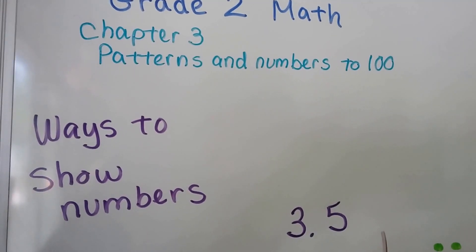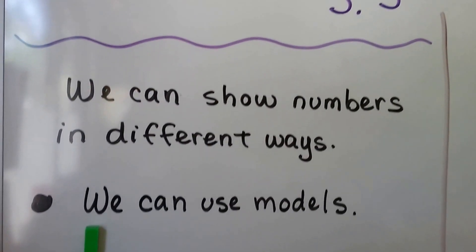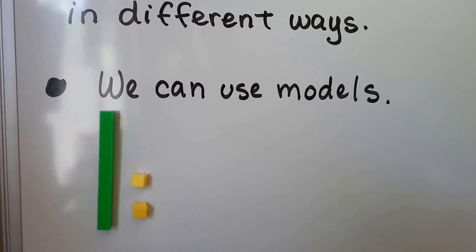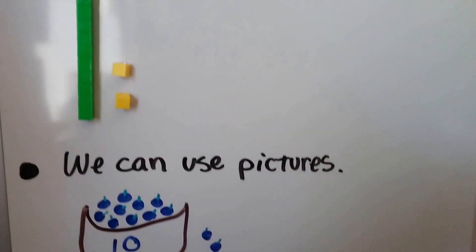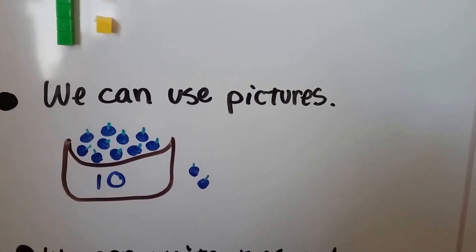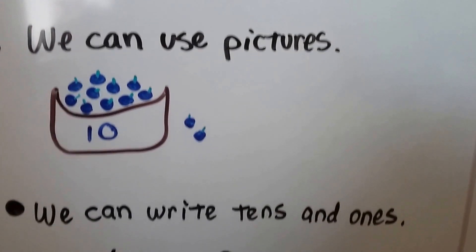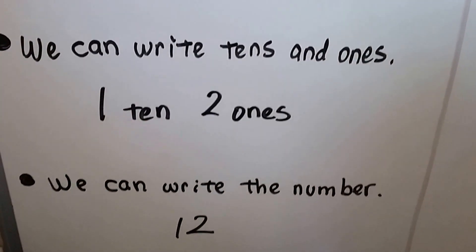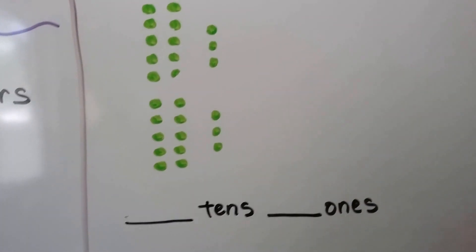Ways to show numbers, lesson 3.5. We can show numbers in different ways. We can use models — here we have a long of ten and two units, so we have one ten and two ones. We can use pictures — a bowl of ten berries and two ones on the side. We can write tens and ones: one ten and two ones. We can also write the number as twelve.